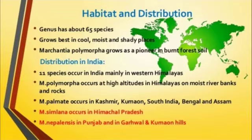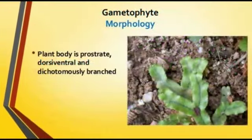Next are the morphological features of Marchantia. There are two forms: the gametophyte and the sporophyte. The gametophyte plant body is prostrate, dorsiventral, and dichotomously branched. You can see in the figure that prostrate and dorsiventral are distinct features of the morphology of Marchantia.